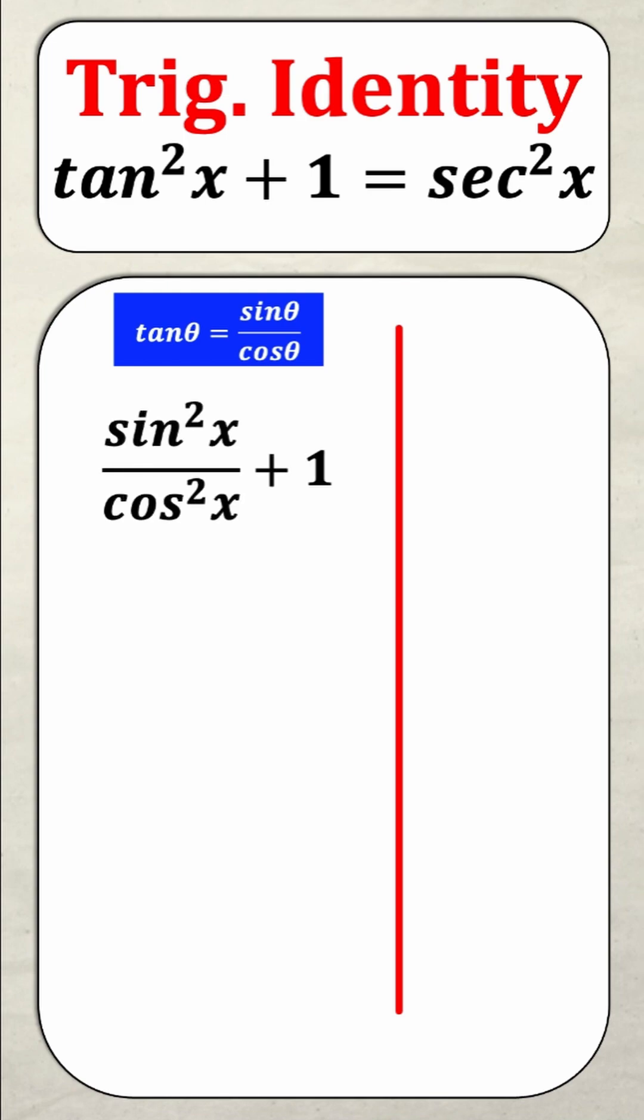And if I do that I get this line sine squared x over cos squared x plus one. Now if I want to rewrite the right hand side you'll see that secant is just a reciprocal. So I can use a reciprocal identity.